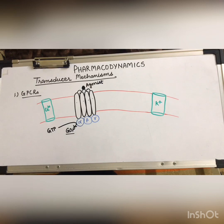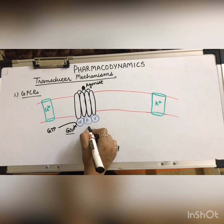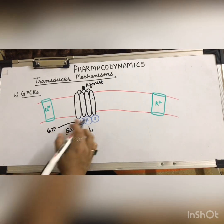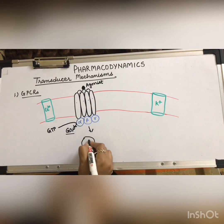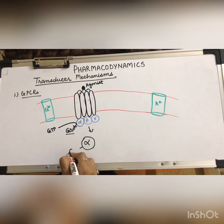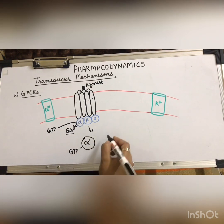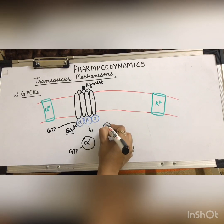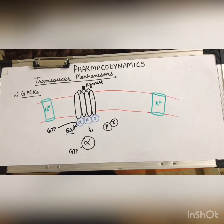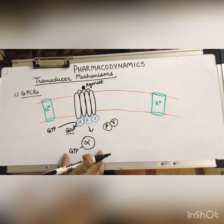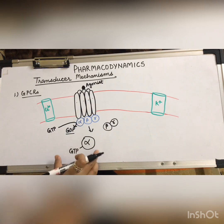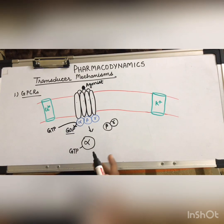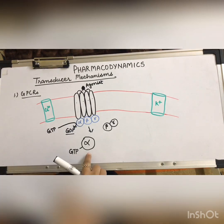GTP comes and knocks out GDP, replacing GDP in this unit. After GTP binding, the alpha subunit dissociates from the trimer, and a beta-gamma dimer is formed. This activated alpha subunit then goes and either activates or inhibits the effector, which can be any enzyme, ion channel, or carrier protein.